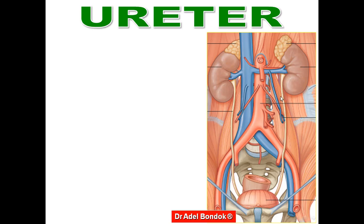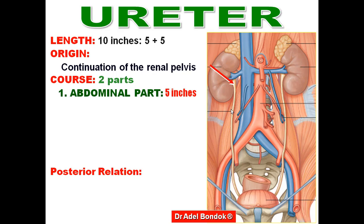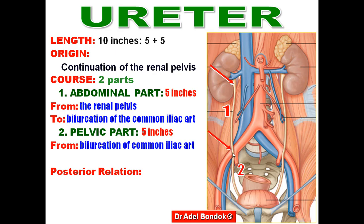The ureter is about 10 inches long — 5 inches in the abdomen and 5 inches in the pelvis. It originates as the continuation of the renal pelvis. Regarding its course, it is divided into an abdominal part (5 inches), which extends from the renal pelvis to the bifurcation of the common iliac artery, and a pelvic part (5 inches), which extends from the bifurcation of the common iliac artery to the posterior superior angle of the urinary bladder.